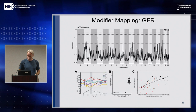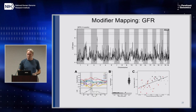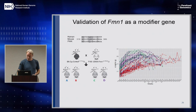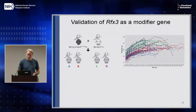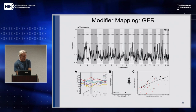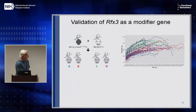You see females are mildly affected and males are severely affected — that's no surprise because the males are hemizygous. But what we wanted to do next was validate that this gene RFX3, which we mapped using 100 DO mice, is actually a modifier.